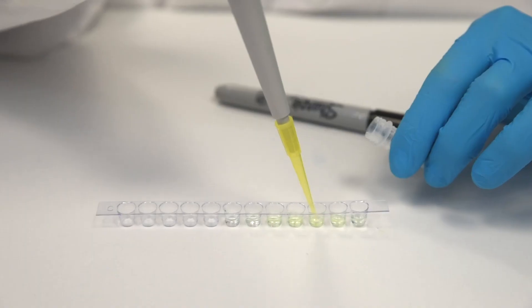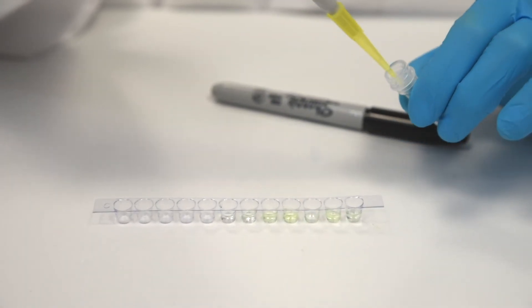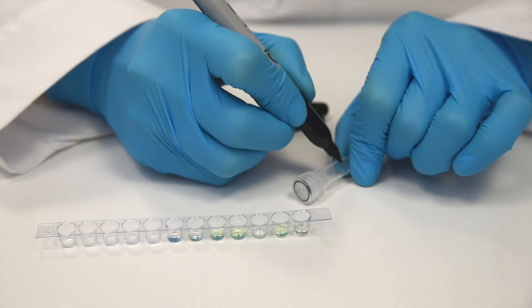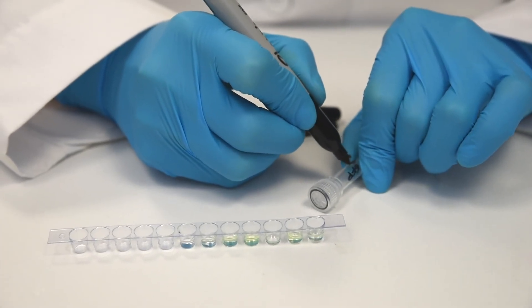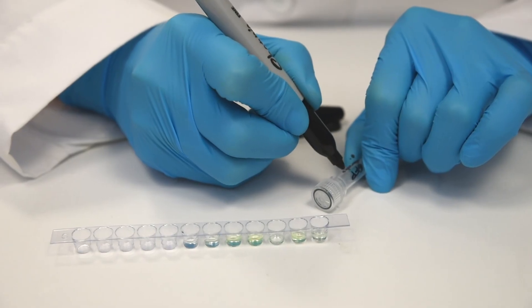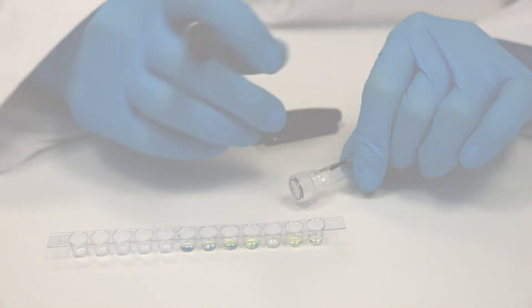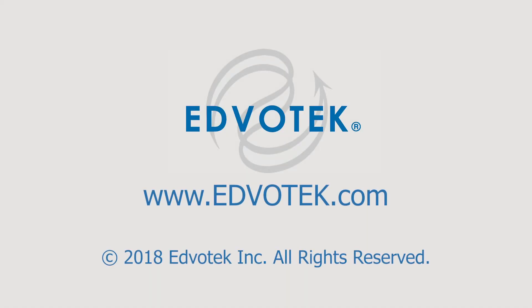Step 8: Transfer an additional 30 microliters of the same elution to a second screw-top microcentrifuge tube. Label this tube GFP denatured. You are now ready to proceed to Module 4, Analysis of GFP by SDS Gel Electrophoresis.